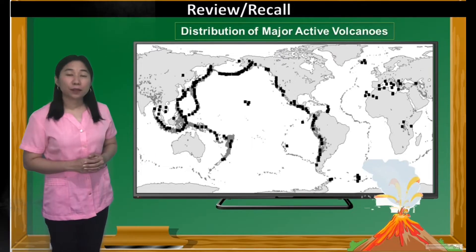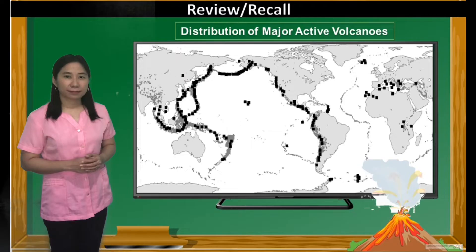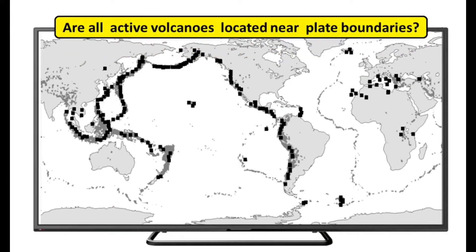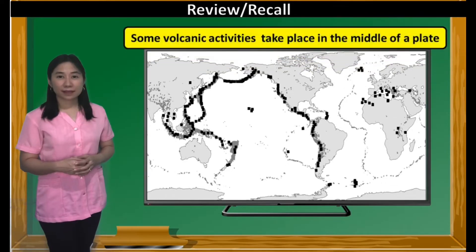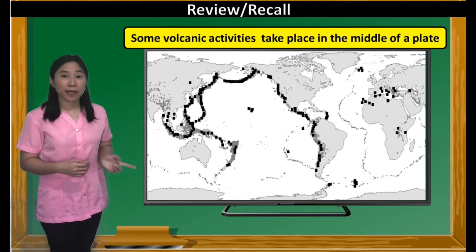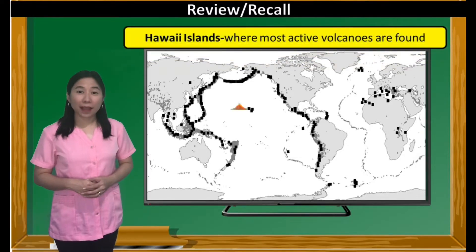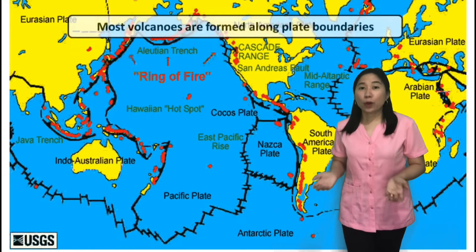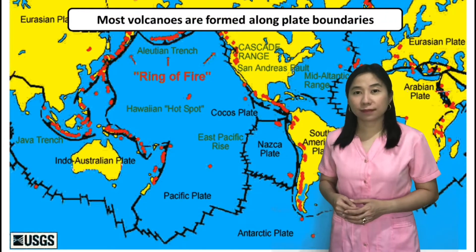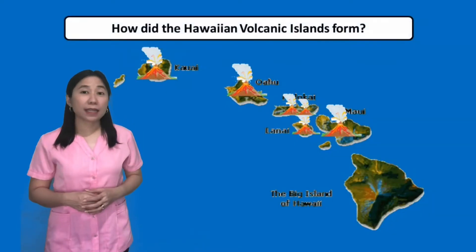This map shows the major active volcanoes of the world. Examine it carefully. Are all active volcanoes located near plate boundaries? Not all volcanoes are found near plate boundaries. Some volcanic activities take place in the middle of a plate, just like the islets of Hawaii, where we can find some of the most active volcanoes. You have learned that most volcanoes are formed along plate boundaries. But how did the Hawaiian volcanic islands form? Let's find out in today's lesson.